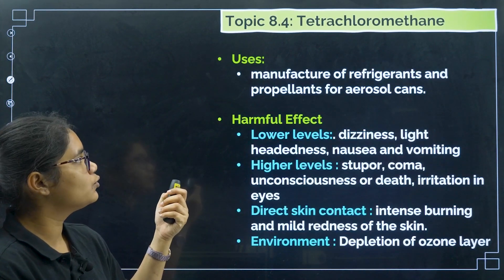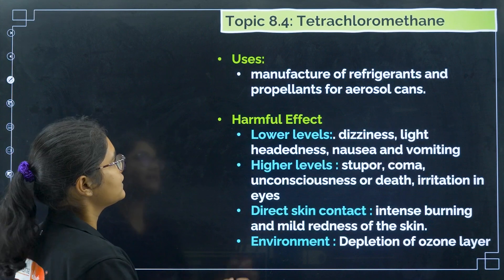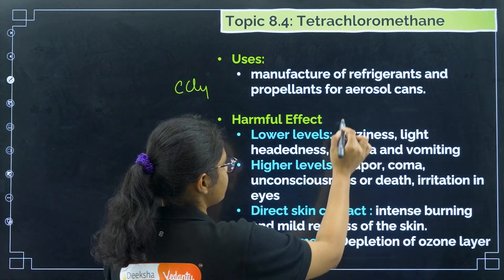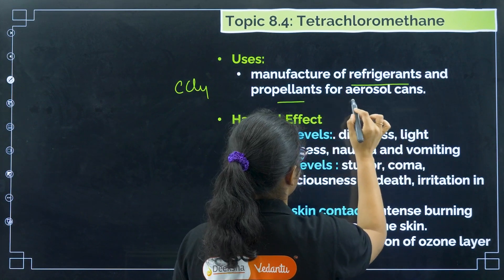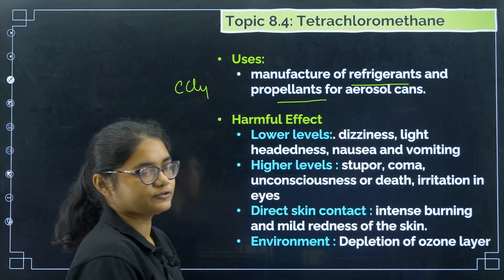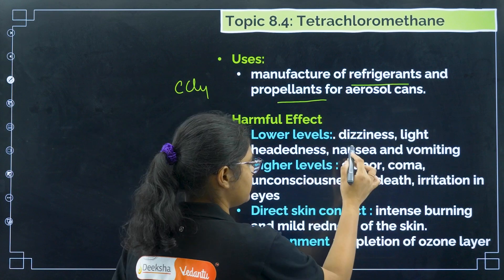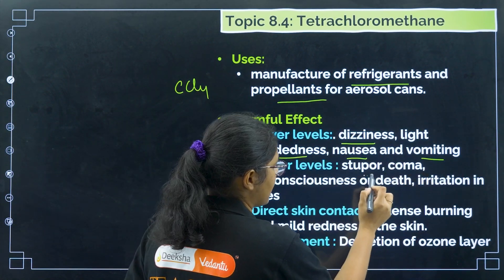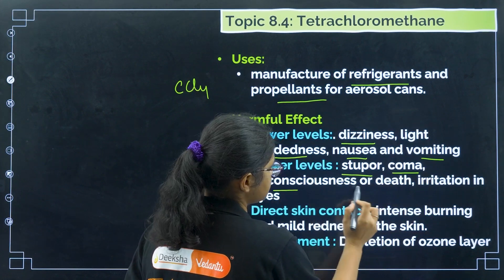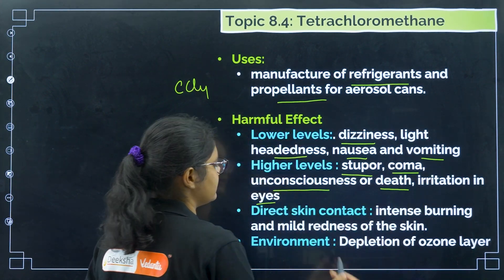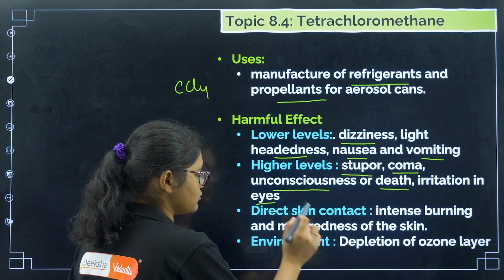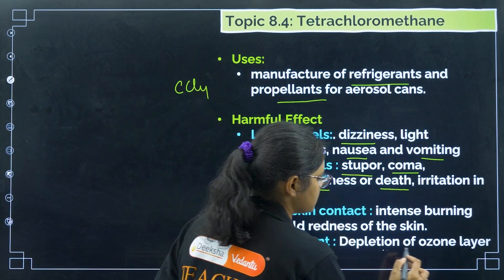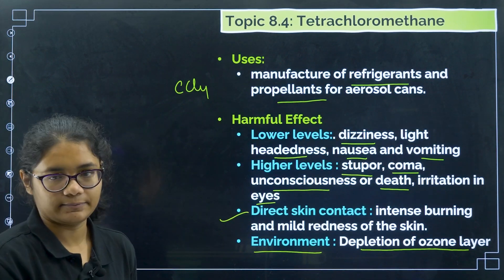Next is tetrachloromethane, CCl₄. It is used in the manufacture of refrigerants and propellants, and for aerosols. The harmful effects: at a low level, you can have dizziness, slight headache, nausea, and vomiting. At a higher level, you can have stupor, coma, unconsciousness or death, and irritation in the eyes. Direct skin contact is also harmful. One more important thing: tetrachloromethane is responsible for the depletion of the ozone layer.